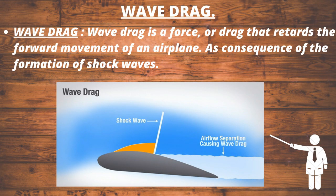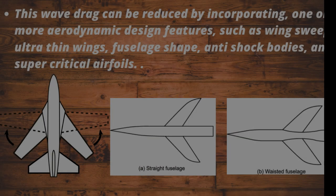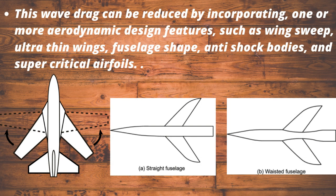Wave drag. Wave drag is a force that retards the forward movement of an airplane in both supersonic and transonic flight, as a consequence of the formation of shock waves. Shock waves radiate a considerable amount of energy, resulting in drag on the aircraft. Wave drag can be reduced by incorporating aerodynamic design features such as wing sweep, ultra-thin wings, fuselage shape, anti-shock bodies, and supercritical airfoils.